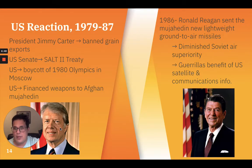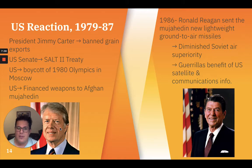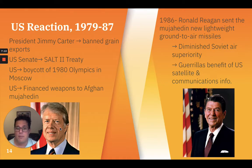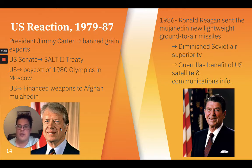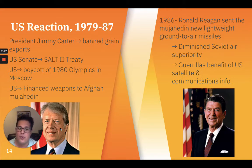There was a significant U.S. reaction from 1979 to 1987. The U.S. government believed the invasion of Afghanistan was a new and highly threatening development in Soviet foreign policy, and mostly feared losing access to the oil supply in the region. President Jimmy Carter responded by banning grain exports to the USSR, and the U.S. Senate refused to ratify the SALT II Treaty. The U.S. also boycotted the 1980 Olympic Games held in Moscow. More importantly, the U.S. financed the supply of weapons to Afghan Mujahideen guerrillas through agencies in neighboring Pakistan. In 1986, President Ronald Reagan decided to send the Mujahideen new lightweight ground-to-air missiles, rapidly diminishing Soviet air superiority and allowing guerrillas to benefit from U.S. satellite and communication information.